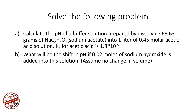So this is what you have to do. You have a buffer solution — determine its pH — and then you're going to add some sodium hydroxide. You want to calculate the new pH and take the difference in pH between the original solution and the pH of the solution after mixing sodium hydroxide.